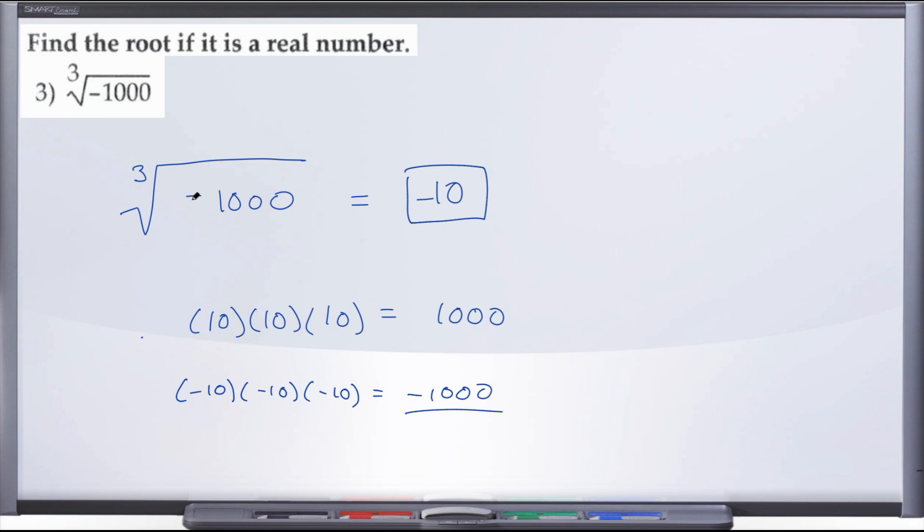When your index or root is odd, you can have a negative under the radical and your answer will be negative. You cannot have a negative under the radical if your root is even (2, 4, 6, 8, and so forth). The final answer for number 3 is negative 10.